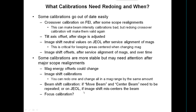Some calibrations are more stable but may need attention after major realignments. Mag energy offsets could change, though we haven't really seen that happen — it's still good practice after a major realignment. Image shift calibrations could change on FEI machines because there's an alignment that calibrates the relationship between image shift coils and the amount of image shift movement. But this is global, so you just redo them at one mag and are given the option to shift all calibrations by the same amount, then save them out.